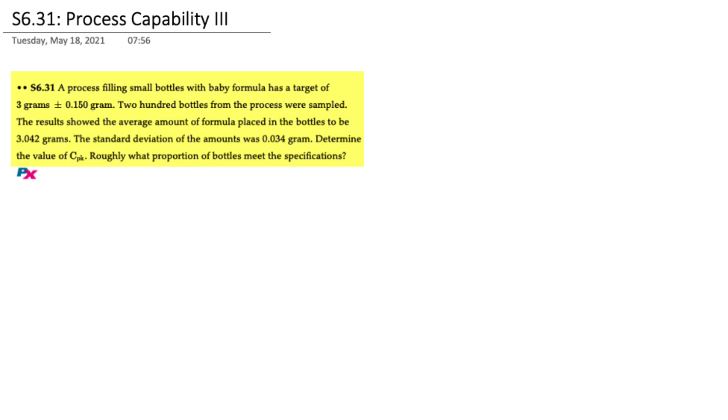In this problem we have a process that fills small bottles with baby formula and has a target of 3 grams plus or minus 0.15 gram. 200 bottles from the process were sampled and the results showed that the average amount of formula placed in the bottles was 3.042 grams. The standard deviation was 0.034 grams.